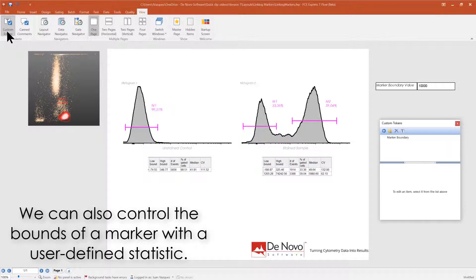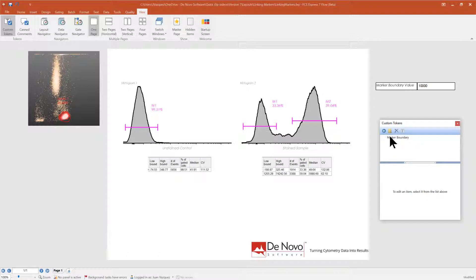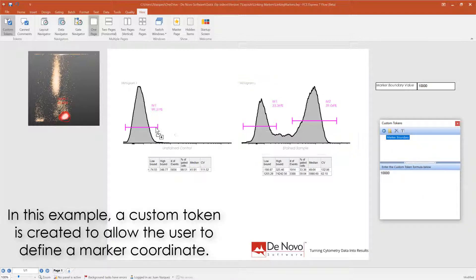We can also control the bounds of a marker with a user-defined statistic. In this example, a custom token is created to allow the user to define a marker coordinate.